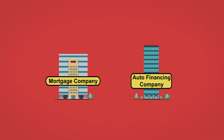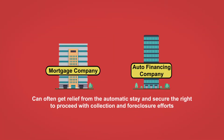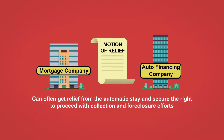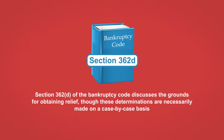Secured creditors, such as mortgage and auto financing companies, can often get relief from the Automatic Stay and secure the right to proceed with collection and foreclosure efforts by filing a motion for relief from the Automatic Stay. Section 362 of the Bankruptcy Code discusses the grounds for obtaining relief, though these determinations aren't necessarily made on a case-by-case basis.